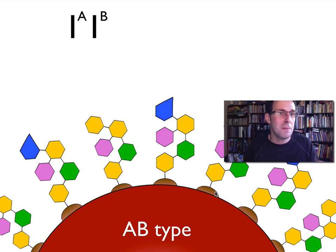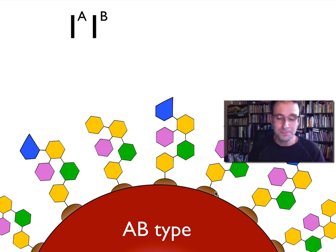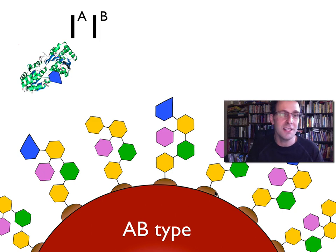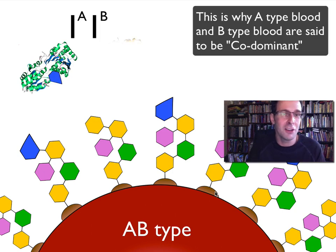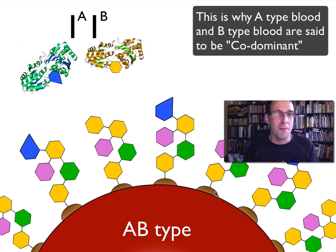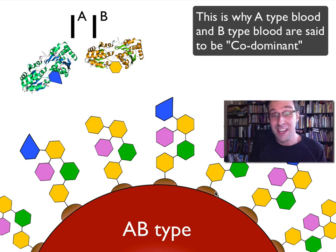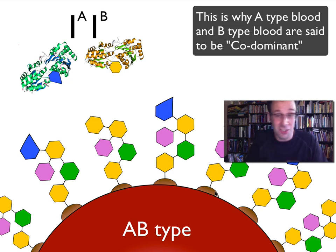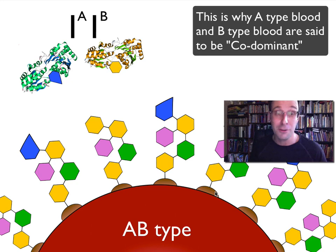Of course, if you inherit a Big I-A allele from one parent and a Big I-B allele from the other, you're going to produce both of those glycosyltransferase enzymes — one which converts H-antigens into A-antigens and the other that converts H-antigens into B-antigens. So half of the H-antigens will be converted into A's and the other half into B's. And that's what we refer to as AB-type blood.